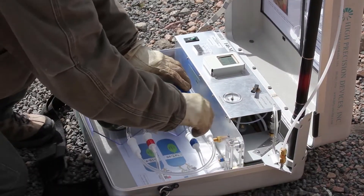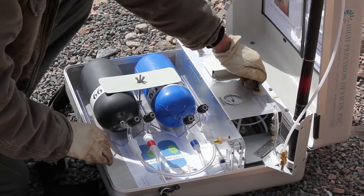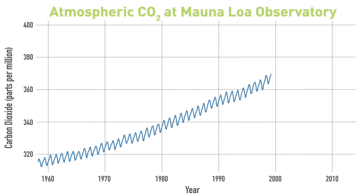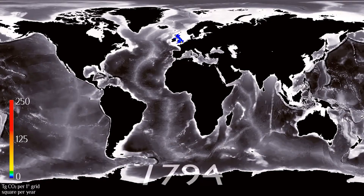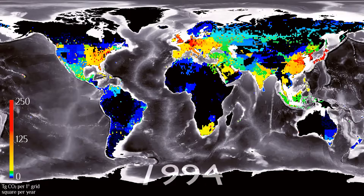We measure greenhouse gases directly at several sites across the planet. The longest continuous record for carbon dioxide goes back over 60 years. We also measure greenhouse gas concentrations in ancient air trapped in ice cores. Since the industrial revolution, greenhouse gas concentrations have been increasing, primarily due to the burning of fossil fuels.